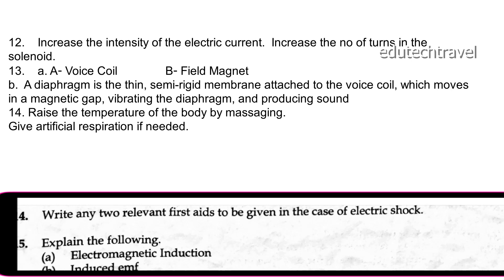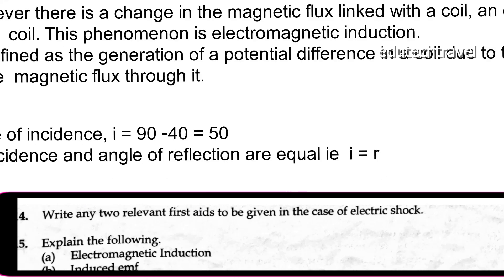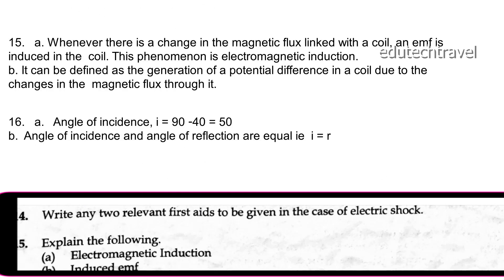Explain electromagnetic induction and induced EMF. When there is a changing magnetic flux linked with a coil, an EMF is induced in the coil — this phenomenon is known as electromagnetic induction. Induced EMF is defined as the generation of a potential difference in a coil due to changes in the magnetic flux through it.